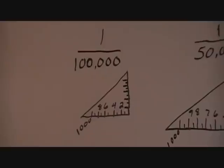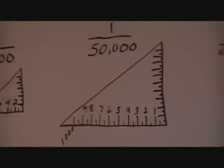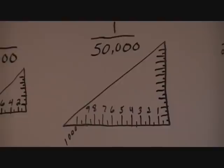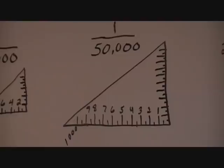Now shifting over to the 1 over 50,000. Same type of tick marks, but you can see they're a little more spread out since it's a bigger triangle. It's broken down into meters, from right to left, from 100 to 1,000 meters. This time the little tick marks in between represent another 50 meters. So it starts out at 50 meters, then 100, and so forth in 50-meter increments, all the way up to 1,000.